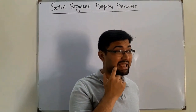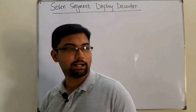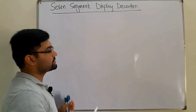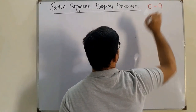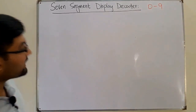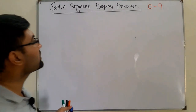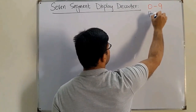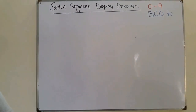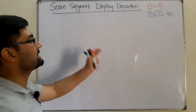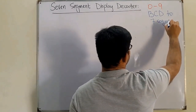As it is clear by the name, a seven segment display consists of seven segments. With this display we can display decimal digits from zero to nine. The display works on binary, so we have to convert from BCD to drive these seven segments.